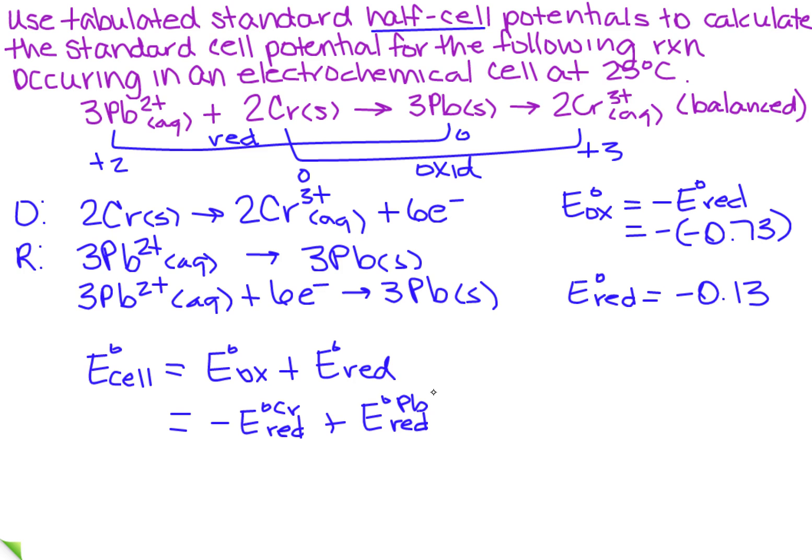So now it's one of those plug-and-chug games. So I'm going to have the opposite of minus 0.73 plus minus 0.13. So when I add these two together, I'm going to get 0.60. And remember, we're talking about potential, so it's in volts.